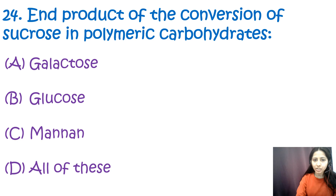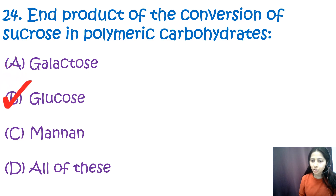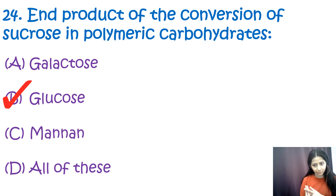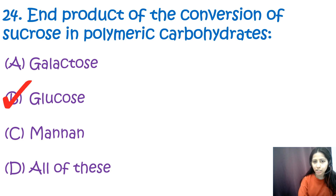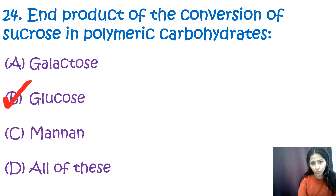Question 24: The end product of the conversion of sucrose in polymeric carbohydrate is — galactose, glucose, mannose, or all of these? The correct option is B — glucose. Sucrose is a disaccharide made up of glucose and fructose. When it undergoes hydrolytic conversion it breaks down into monosaccharides, and the glucose unit can be used for various metabolic pathways. Galactose and mannose are not direct products of sucrose conversion.